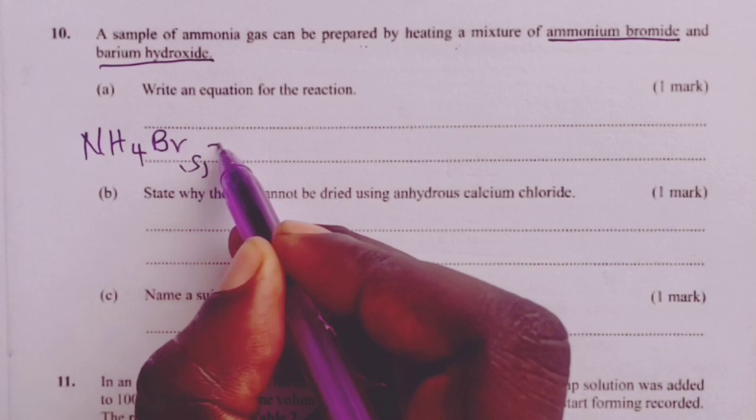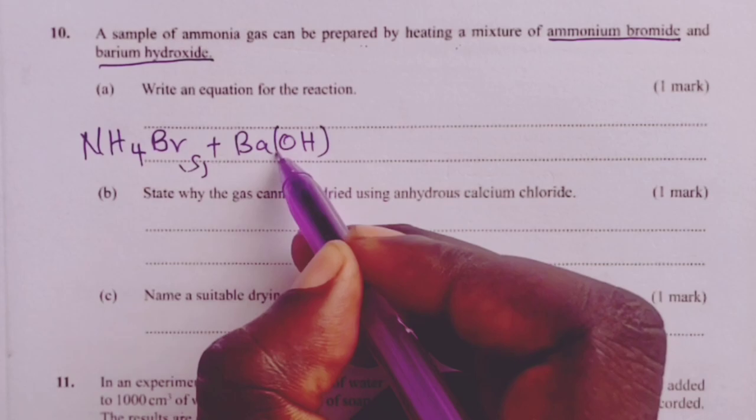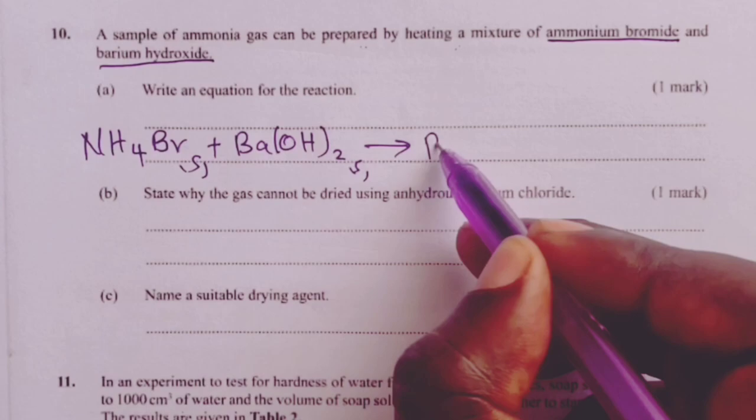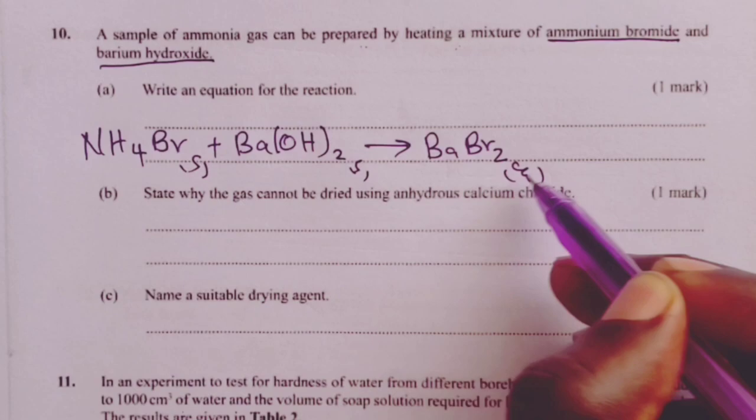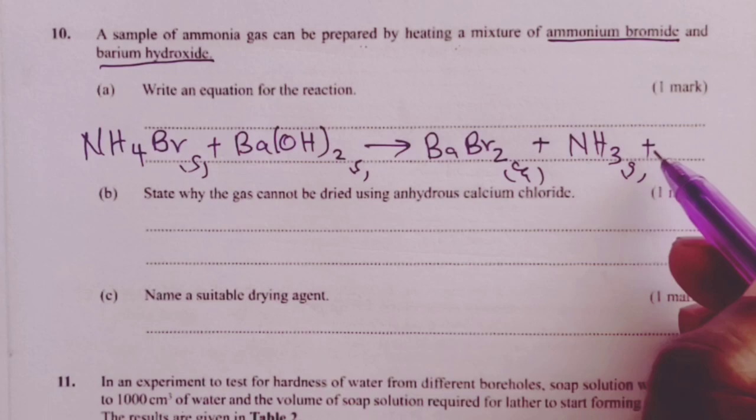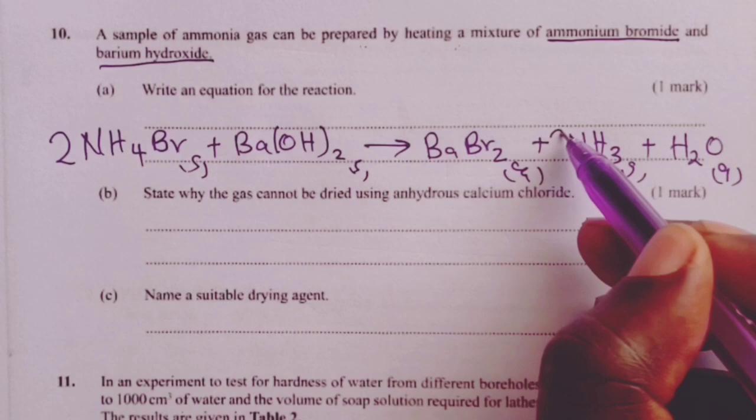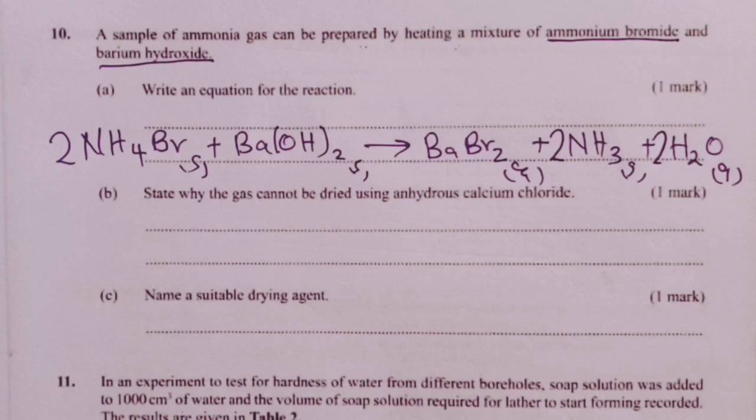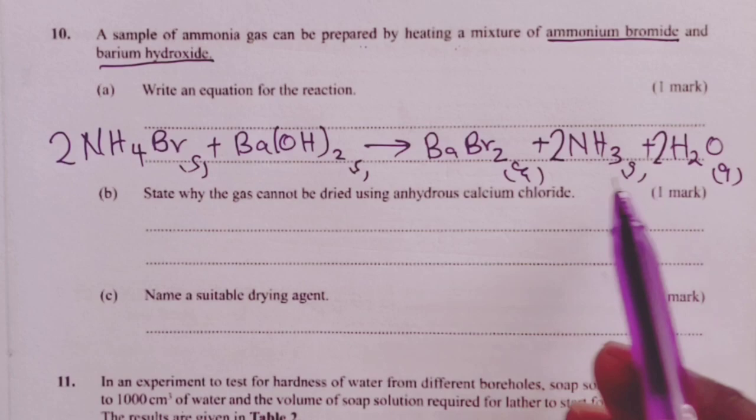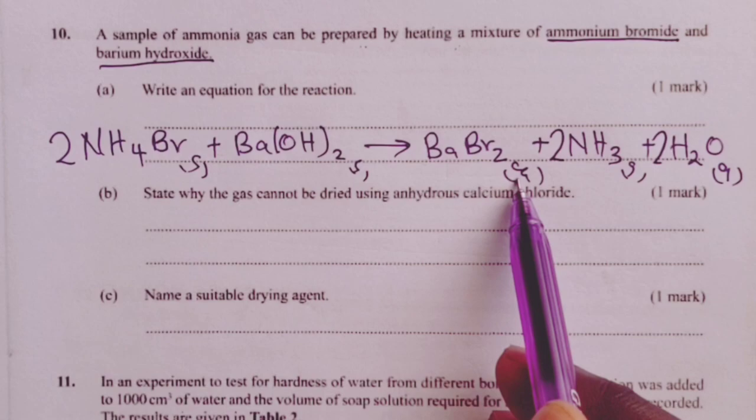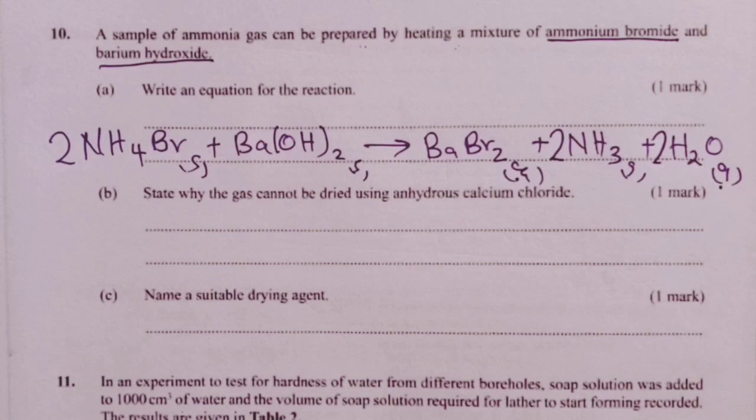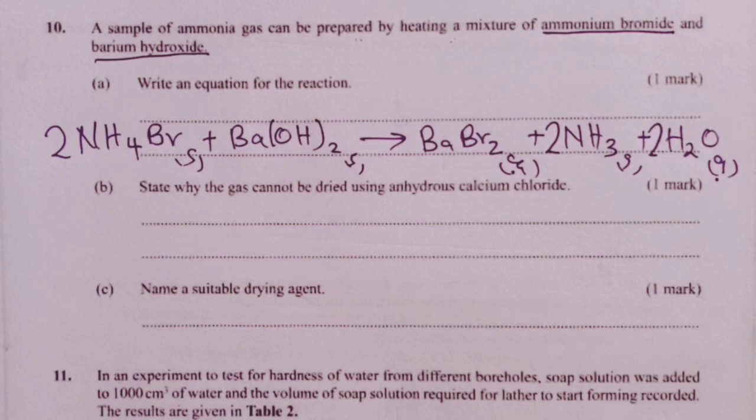We have ammonium bromide, which would be a solid, being reacted with barium hydroxide, which is also a solid. We would obtain barium bromide in aqueous state, together with ammonia gas, and we would get some water as well. We would balance with a 2 on ammonium bromide, a 2 on ammonia gas, and a 2 on water for one mark. Of course, the state for the barium bromide would either be aqueous, acceptable, or solid, and again, for water, we would accept liquid instead of gas as state symbol for that.